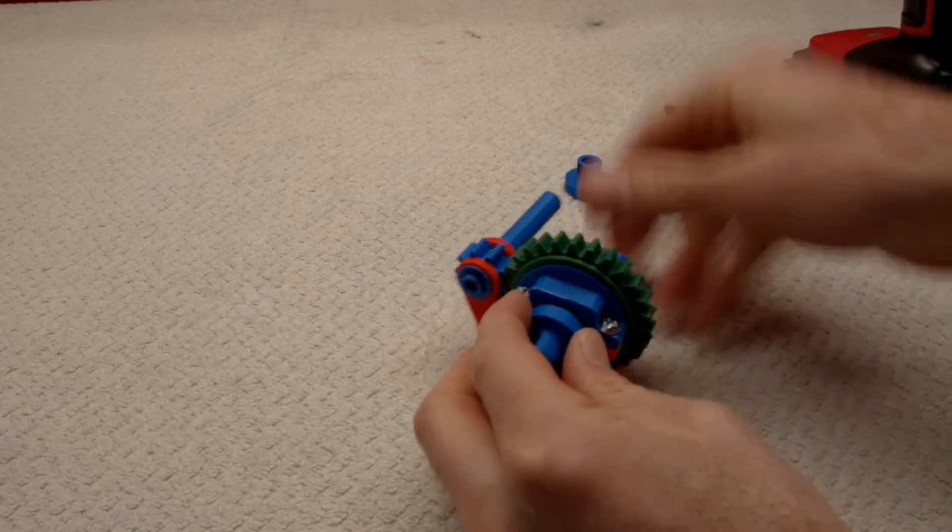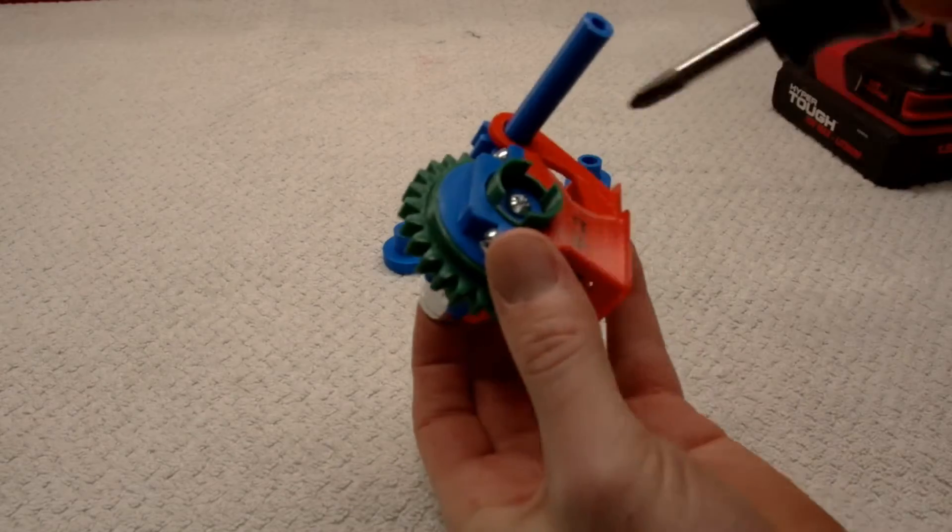To make adjustments, just pop off the output half caps and use a 10 millimeter socket and screwdriver to adjust the screw.